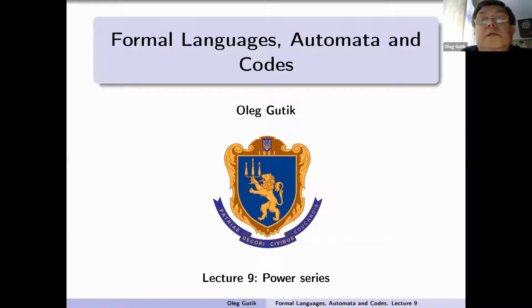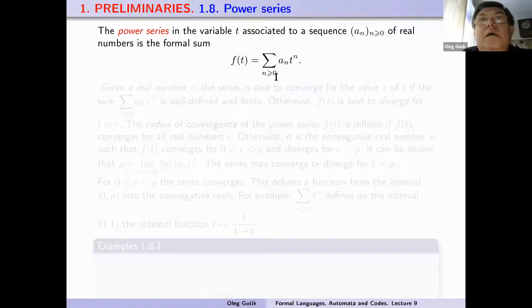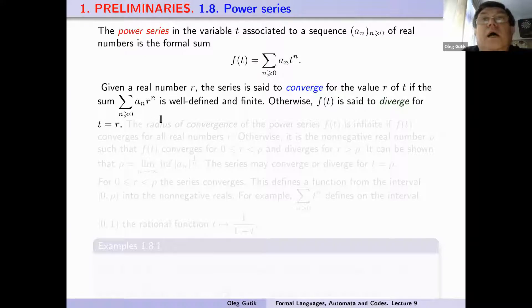So we have lecture number nine. Our topic today will be power series. The power series in variable t associated to the sequence a_n of real numbers is the formal sum: f(t) = sum of a_n * t^n for n from 0, 1, 2, and so on. Given a real number r, the series is said to converge to the value r of t if the following sum is well-defined and finite.